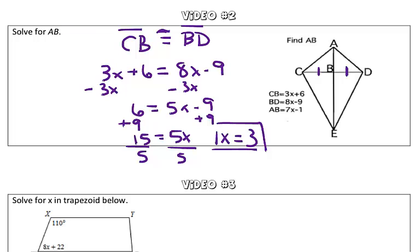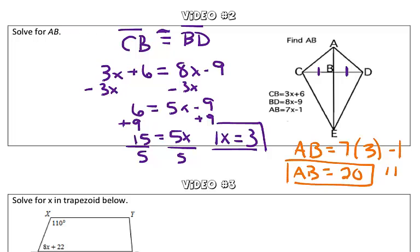But the question did not ask us to solve for x. Instead, the question asked us to solve for AB. We know that AB equals 7 times x minus 1. Since x equals 3, AB equals 7 times 3, which is 21, minus 1, which is 20. So AB has a length of 20 units. Nice work!